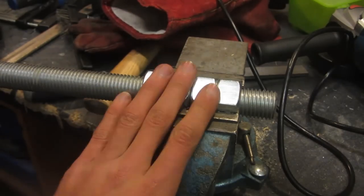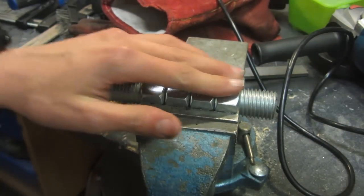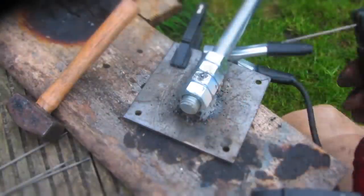Since this is a V thread and not an ACME thread, I'm going to be using four different nuts to try and prevent the thread from stripping as I use it over time. I then welded all four nuts directly onto the top of the spacer that I just welded down.